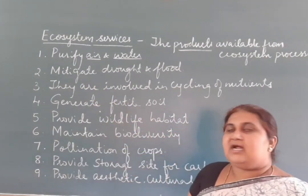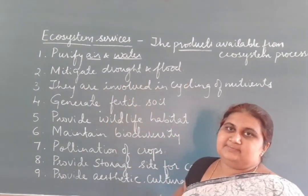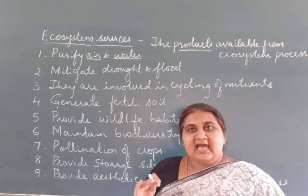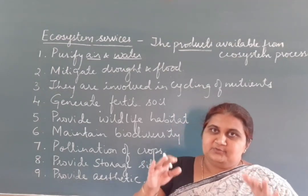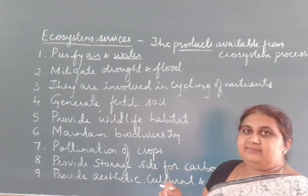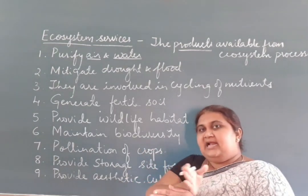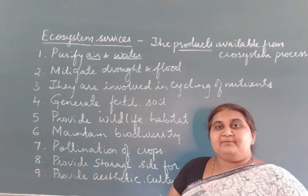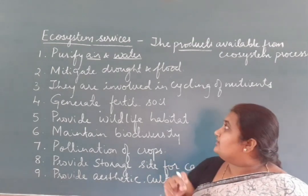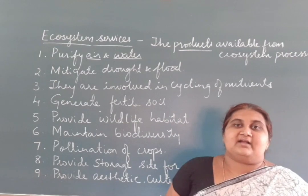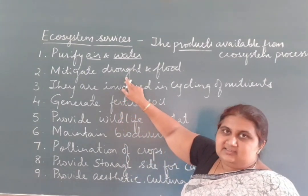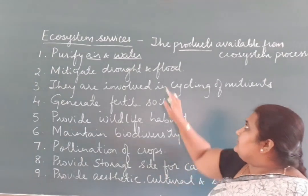Another ecosystem service is to mitigate — to control drought and floods. If a plant cover or forest is present over the soil surface, during heavy rains and floods it acts as a barrier, stops running water, and prevents soil erosion. Plants are involved in controlling the hydrological cycle, and forests help control both drought and floods.